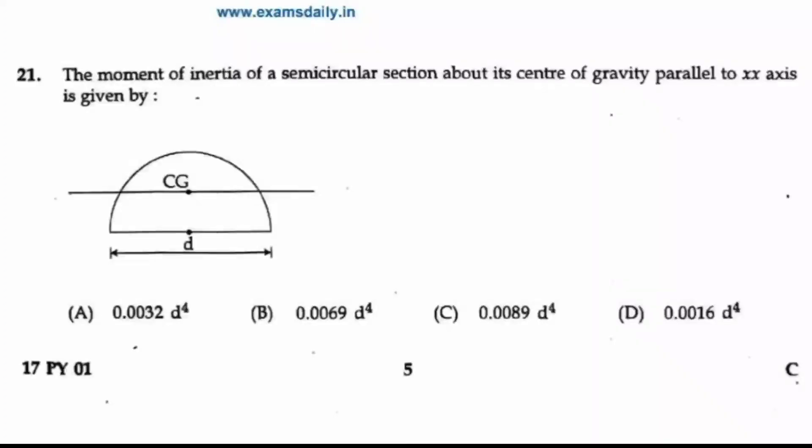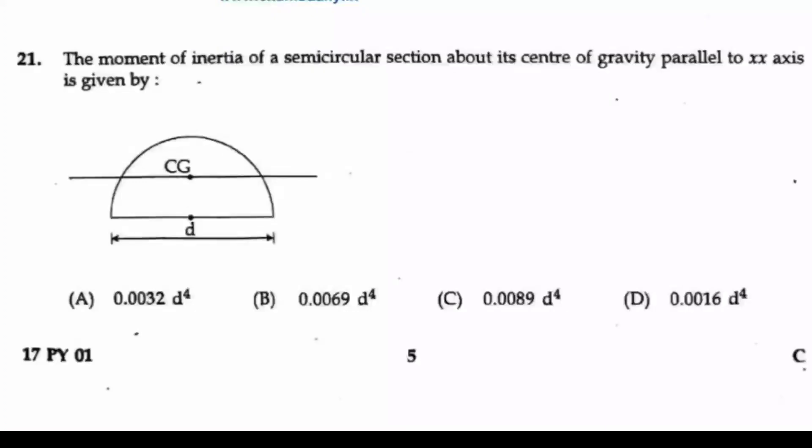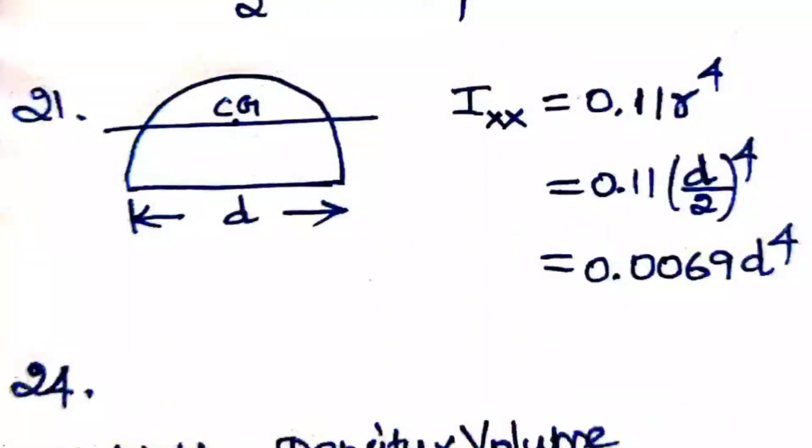Question 21: The moment of inertia of a semicircular section about its center of gravity parallel to the x-x axis is given by? We have to find I_xx. For certain basic diagrams, we study I_xx and I_yy. For this semicircular section, we know I_xx = 0.11r⁴.